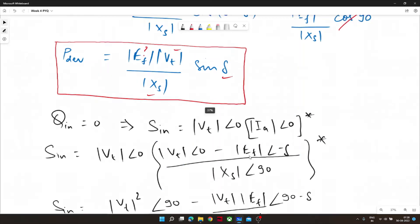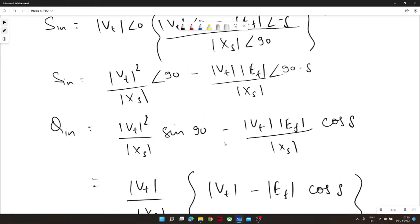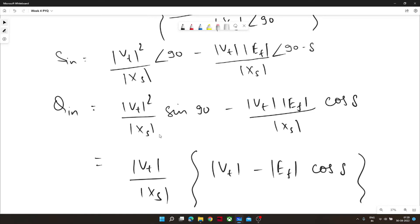After doing all the jugglery we will reach to this equation that would lead to V_t square by X_s angle 90 minus V_t E_f by X_s angle 90 minus delta. Now we need to calculate Q_in and we have to equate that to zero. We will break this component into sine term to get the reactive power component. Now sin 90 would be one so V_t square by X_s sin 90 that would be one and here V_t E_f by X_s cos 90 since sin 90 minus delta is cos delta.